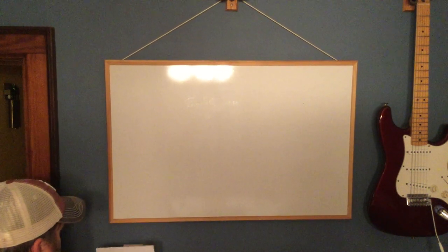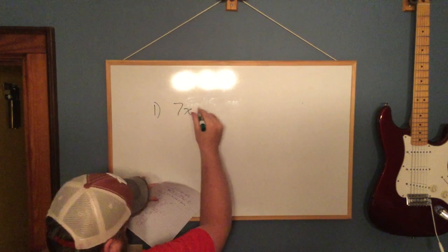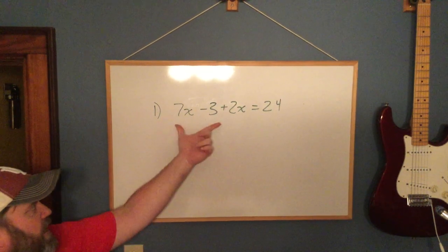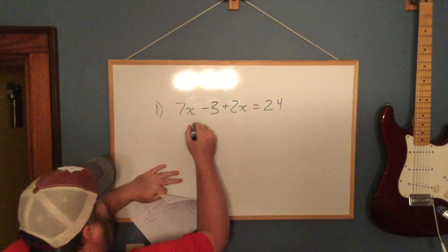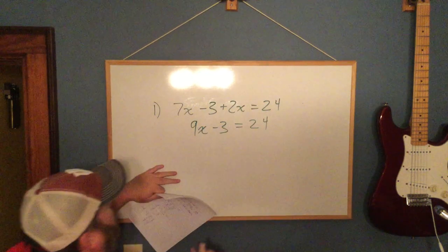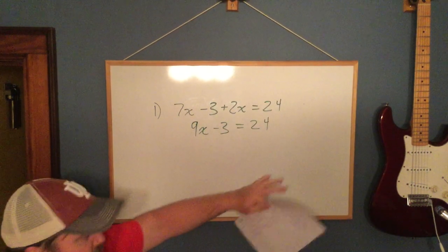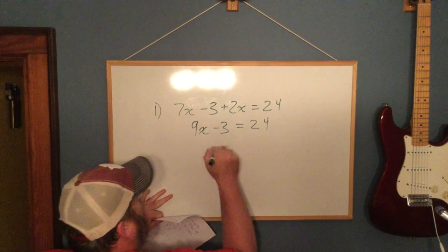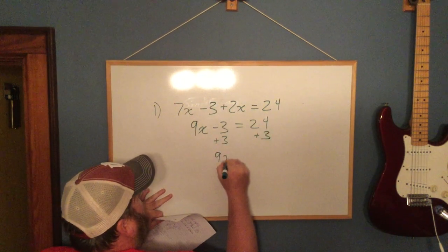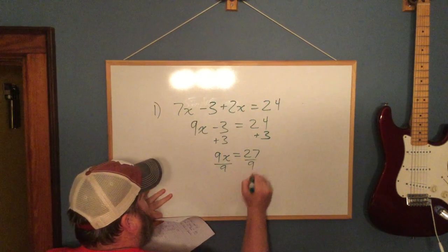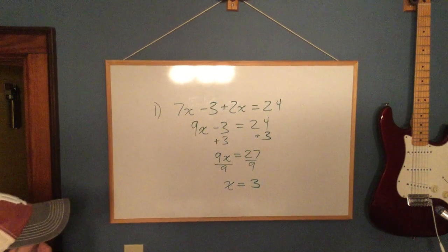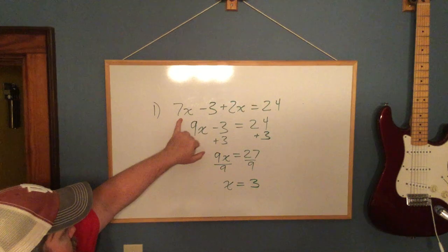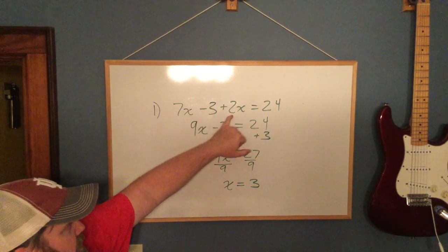Number one: I have 7x minus 3 plus 2x equals 24. If we look at the left side of the equation, we have like terms 7x and 2x, so combine those. We get 9x minus 3 equals 24. Now the left side is as simple as it can get, the right side is as simple as it can get, so now it's time to solve. We're going to start with addition and subtraction because they're lowest on the order of operations. To get rid of subtraction I'll use addition. Now I have 9x equals 27. Divide both sides by 9, and then x is 3.